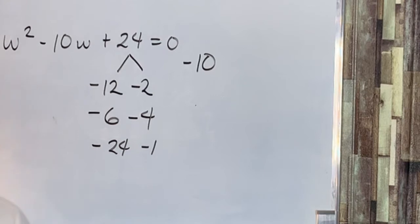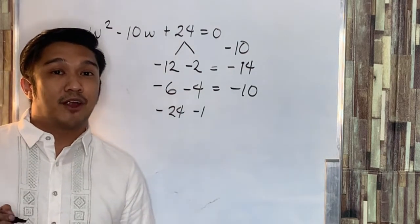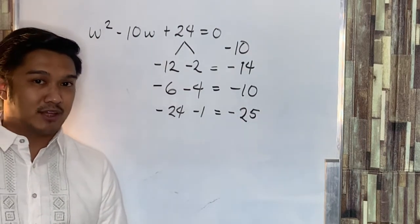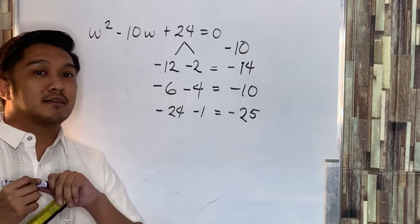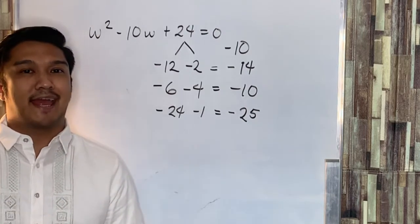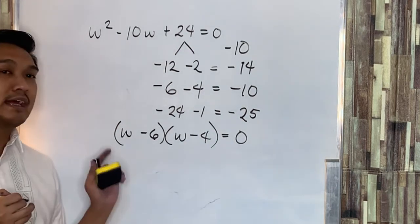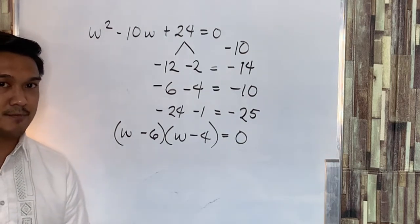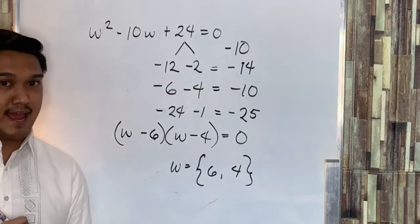Now, let's add up the two factors so that the sum will be negative 10. The sum of negative 12 and negative 2 is negative 14. The sum of negative 6 and negative 4 is negative 10. Since we are looking for the sum of the two factors equal to negative 10, the factors we will consider are negative 6 and negative 4. Therefore, the factored form of our equation is W minus 6 times W minus 4 equals 0, and the solution set is 6 and 4.